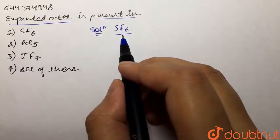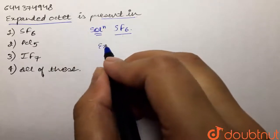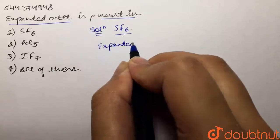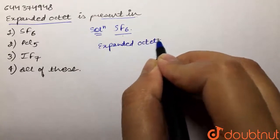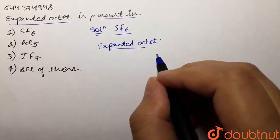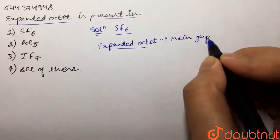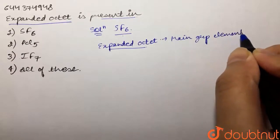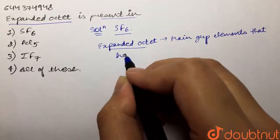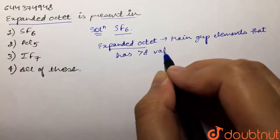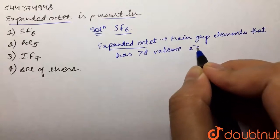Now what is expanded octet? Expanded octet is what happens in this case: the main group elements that has greater than eight valence electrons in their outermost shell. That is the time when we say that particular element has expanded octet.